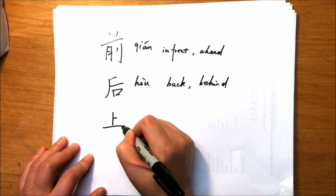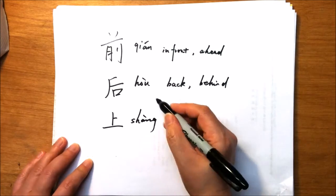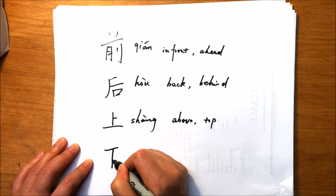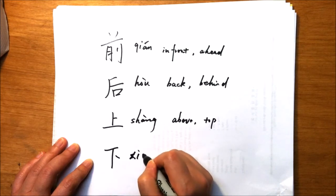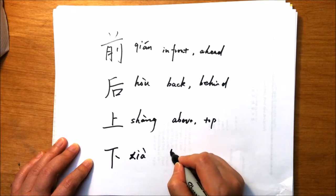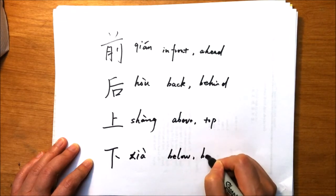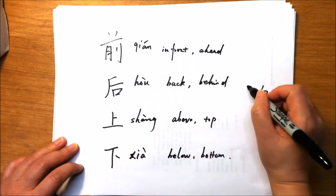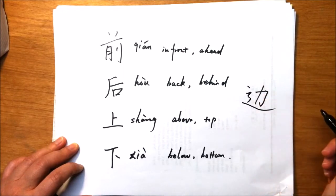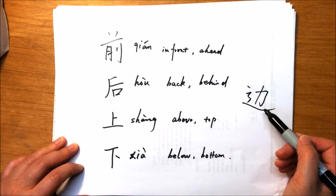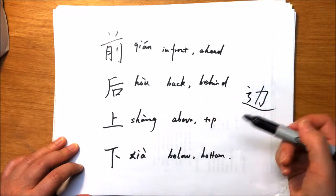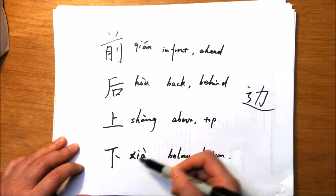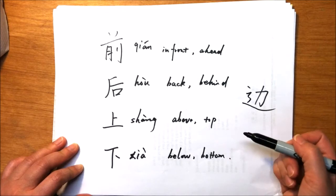上 means above or top. 下 means below or bottom. Then we can add 边 behind this character. 前边 means in front of or ahead. 后边 means back of something or behind something. 上边 means at the top of something. 下边 means below something or at the bottom of something.